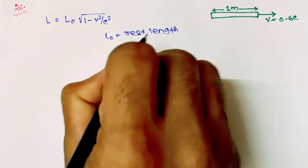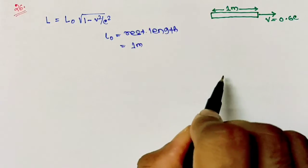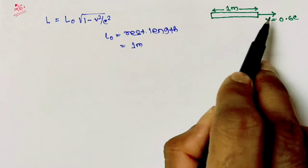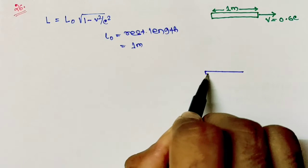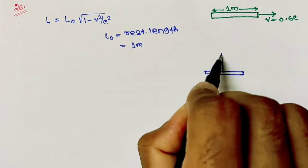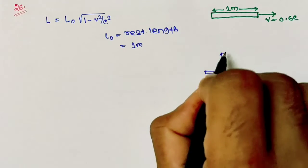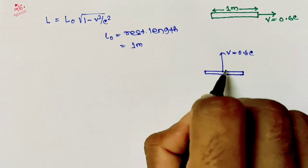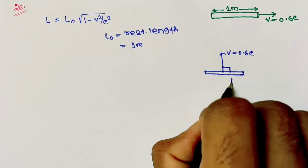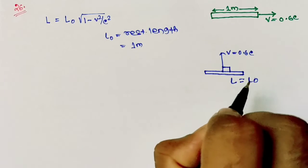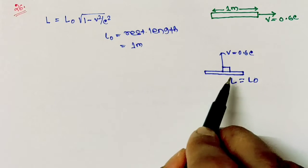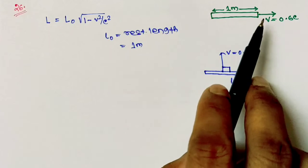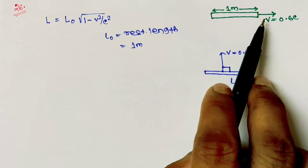The rest length here is 1 meter. Remember, length contracts only when the object moves parallel to its length. If the rod moves perpendicular to its length at some speed like 0.6c, the length will be the same as the rest length — there will be no contraction in length.